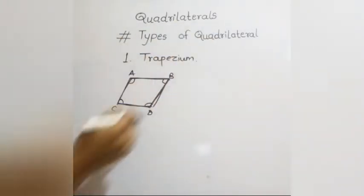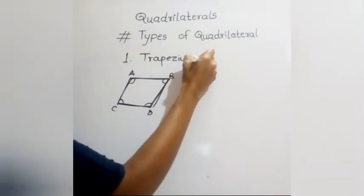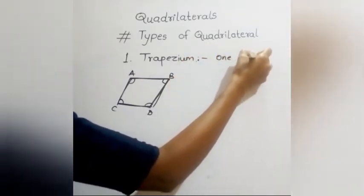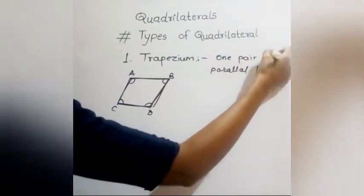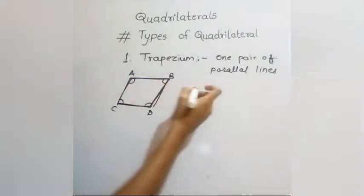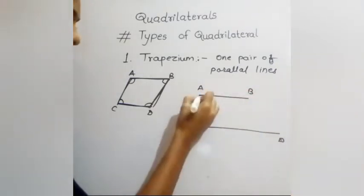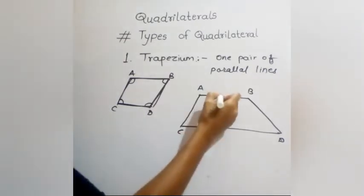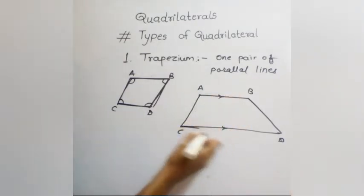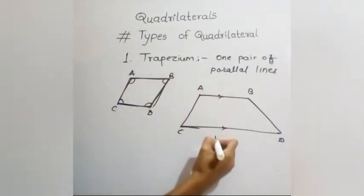The first type of quadrilateral is a trapezium. A trapezium has only one pair of parallel lines. In trapezium ABCD, sides AB and CD are parallel, but AC and BD are not parallel. This type of quadrilateral is called a trapezium.